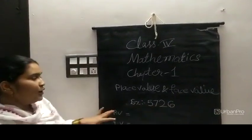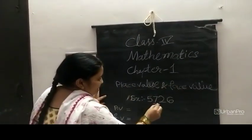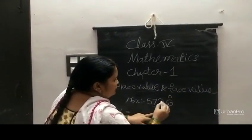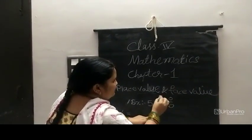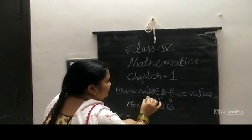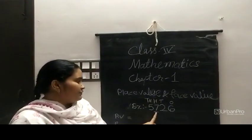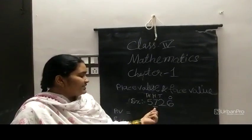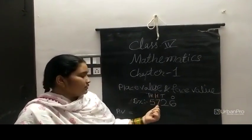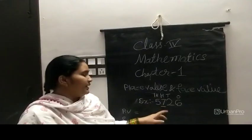Now find out the place value and face value of the 7. See here: the 6 is in the 1s place, 2 is in the 10s place, 7 is in the 100s place, and 5 is in the 1000s place. Now find the place value of the 7. The digit 7 is in the 100s place. See here, the 100s place as a number is written as 700.